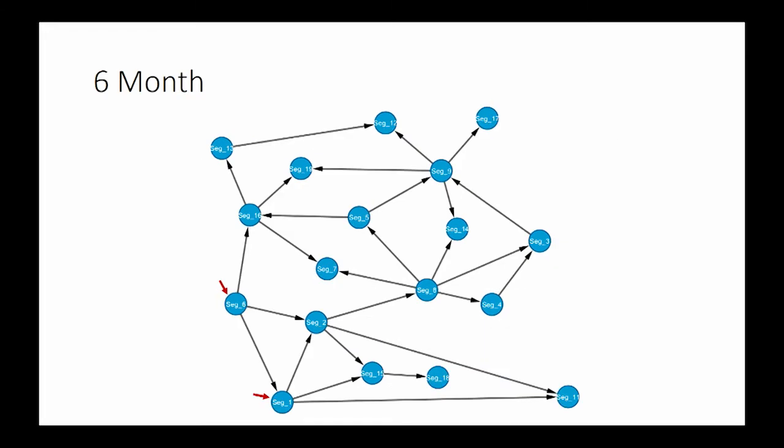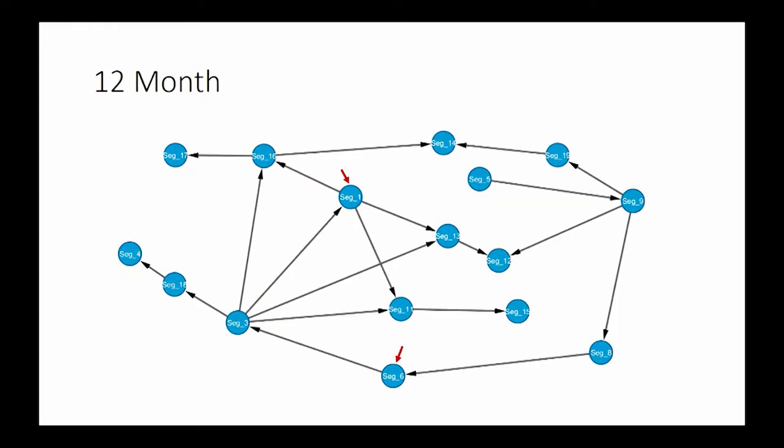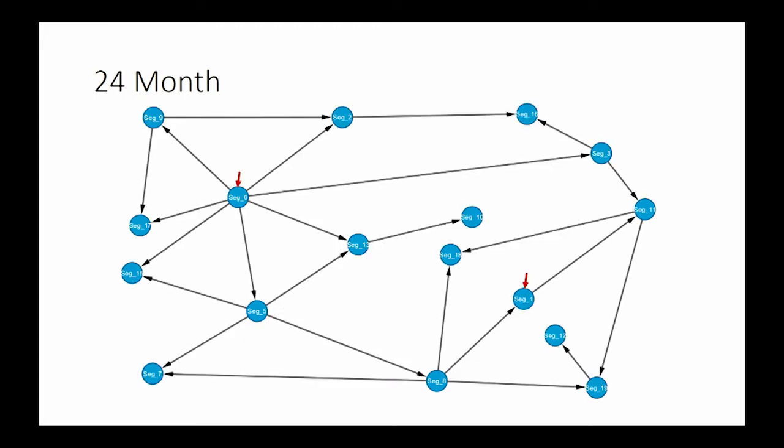Interestingly, at the sixth month, because over time more and more people are changing to have Alzheimer's disease, the information flow between segment 1 and segment 6 completely reverses. Now the information flows from segment 6 to segment 1. This pattern continues at 12 months and 24 months. We still observe the inverse information flow between segment 1 and segment 6, and the path appears a bit longer.